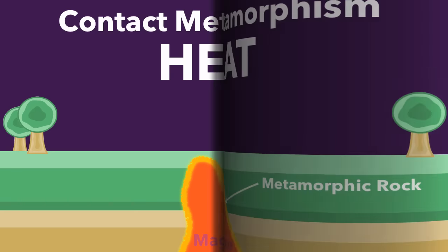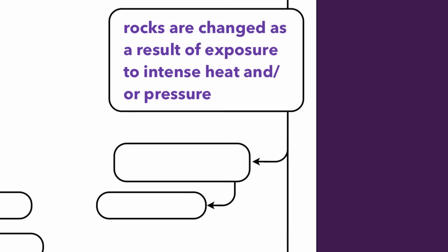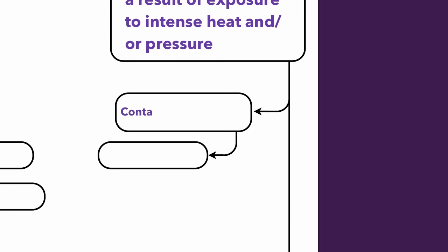Let's fill this in on our flowchart. The first type is contact metamorphism, and this is caused by contact with heat. Whenever a rock comes into contact with magma or lava, it is burned or metamorphosized by that heat.